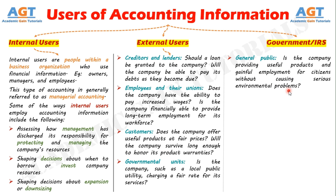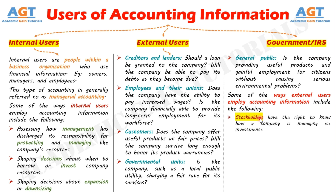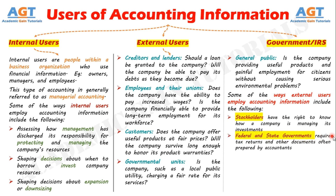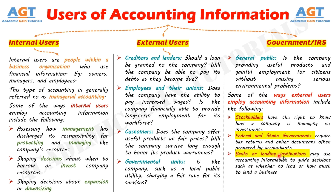Some of the ways external users employ accounting information include the following: stockholders have the right to know how a company is managing its investments; federal and state governments require tax returns and other documents often prepared by accountants; banks or lending institutions may use accounting information to guide decisions such as whether to lend or how much to lend a business; and investors will also use accounting information to guide investment decisions.